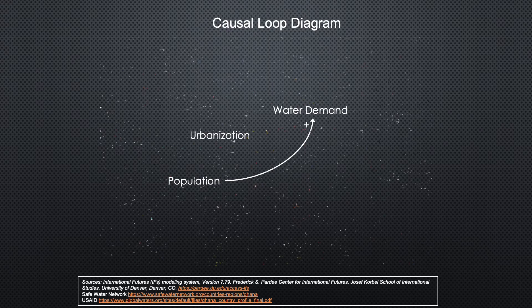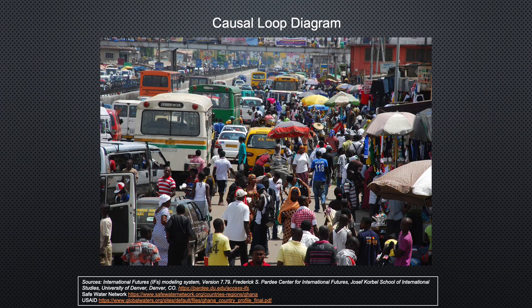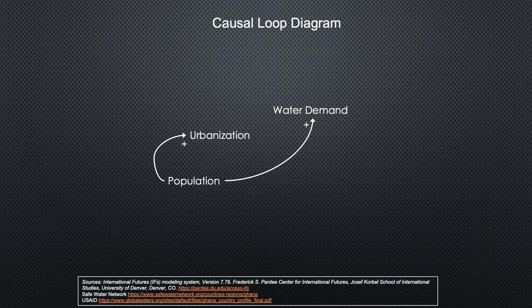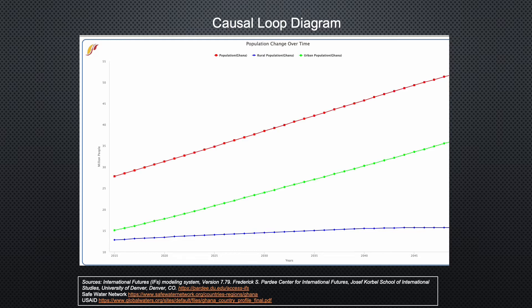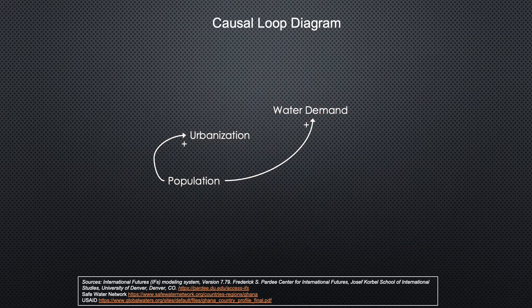Ghana is in a period of extreme urbanization. The growing population is choosing to live in urban cities instead of rural areas. As depicted in blue on the graph, the rural population will only grow slightly between now and 2050 and will remain under 15 million people. The urban population, illustrated in green, is projected to increase rapidly, and urban population growth accounts for Ghana's high population growth rate, depicted in red. Urbanization will increase the demand for water in the cities and require the government to develop the infrastructure to support the growing cities.